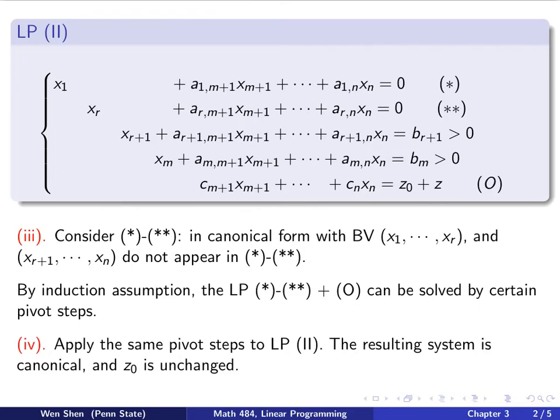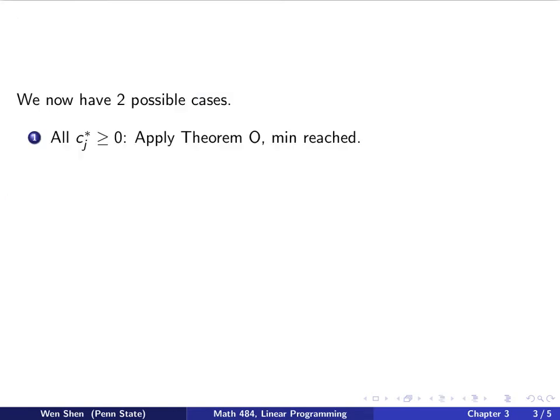And now consider the whole problem, we can apply the same pivot step in this part 3 here, that solved this problem, on this whole system here. Then the resulting system will still be canonical, and the z naught value is unchanged, because right-hand side is zero, you always add zero onto it. Now we are facing two possible cases, which we will discuss in some detail. So the first case, when you do all the pivoting step, and after that you found that all the Cijs are bigger than zero. Then you can apply the optimality criterion theorem, to say that the minimum is reached, and then you stop.